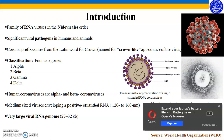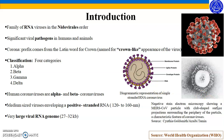Coronaviruses are a family of RNA viruses in the order known as Nidovirales. They are significant viral pathogens in both humans and animals and can cause significant diseases. The word coronavirus comes from the Latin word for crown, named for the crown-like appearance of the virus. Here is an electron micrograph image of a coronavirus, and as you can see, these membrane surface proteins give it a crown-like appearance.